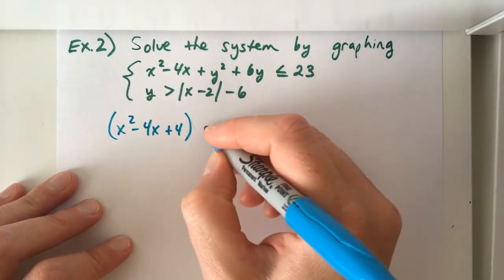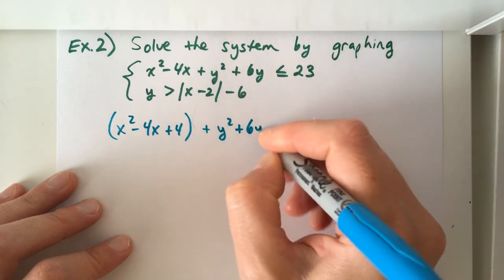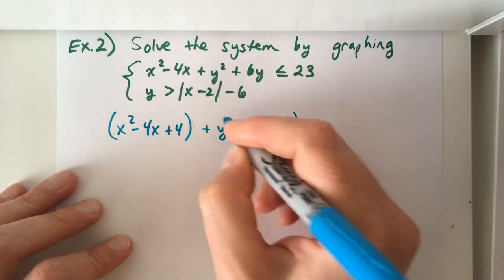For the y's, we have plus y squared plus 6y. Take 6, cut it in half and square it, and we get 9.